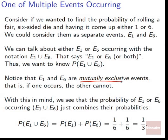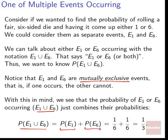E1 and E6 are mutually exclusive events — if one occurs, the other cannot. If we roll a 1, it's impossible to have rolled a 6, and vice versa. There's no overlap. With this in mind, the probability of E1 union E6 just combines their probabilities: P(E1 ∪ E6) = P(E1) + P(E6). The probability of E1 is 1/6, the probability of E6 is 1/6, so we add those together and get 1/3 as the total probability.